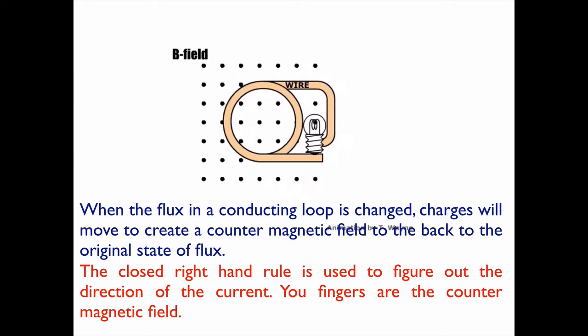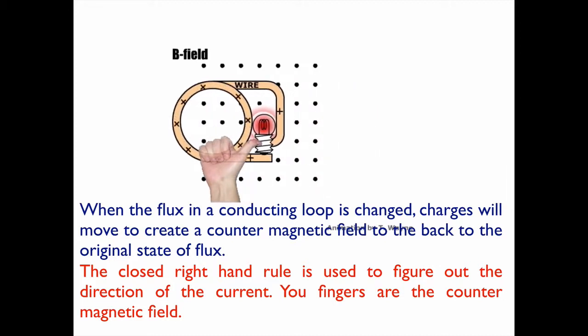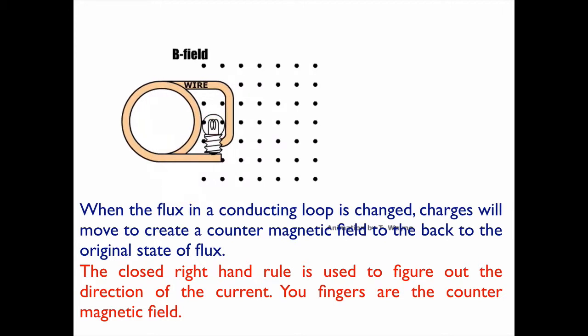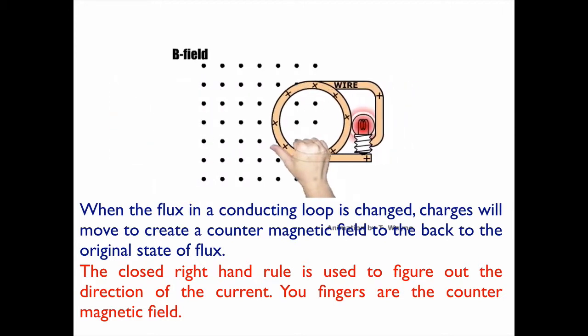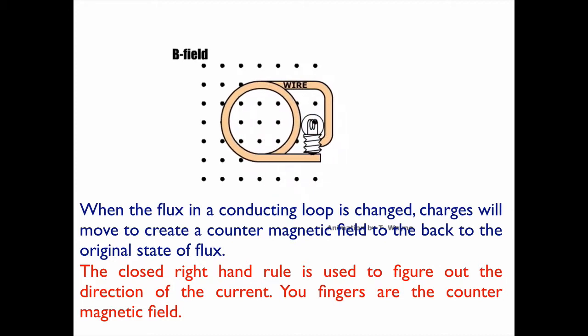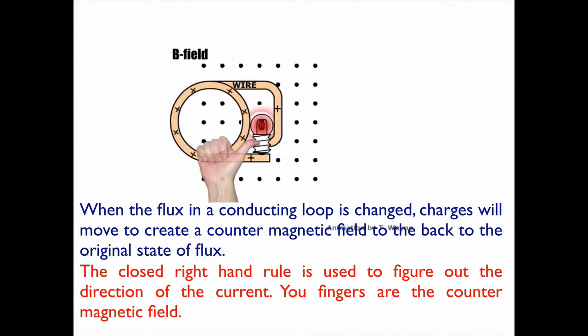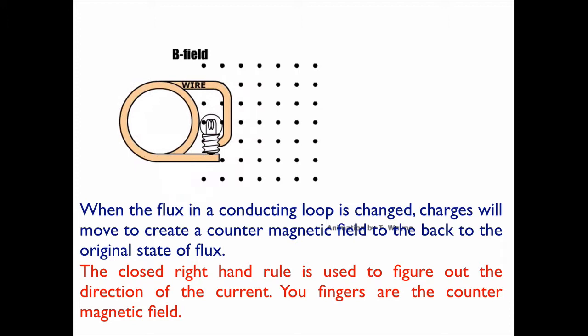Inside the magnetic field, as it moves, nothing happens, but now it begins to leave. When it leaves, I start losing the field coming out of the hoop. So that means I use the closed right-hand rule and grab it so that my fingers are coming out, because I've got to add the field that I'm losing to oppose that change, and that shows me the direction of the current.